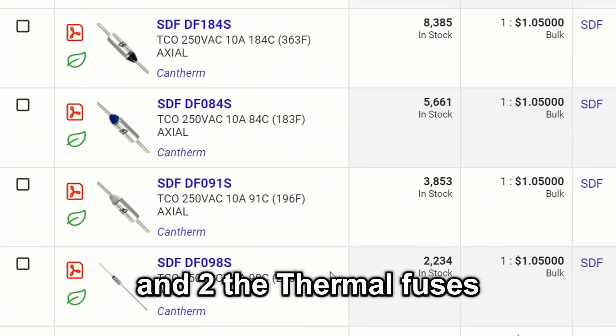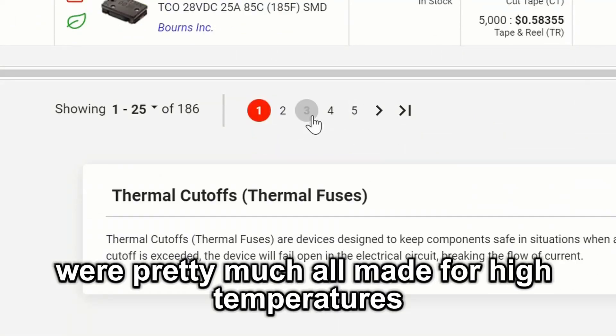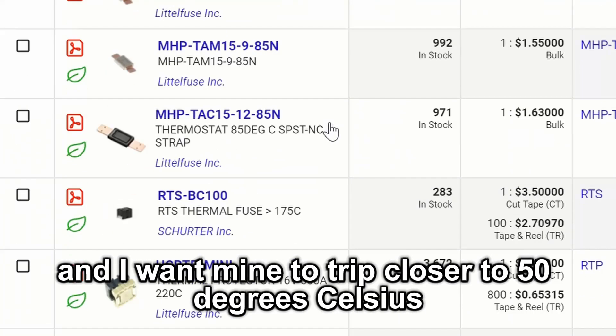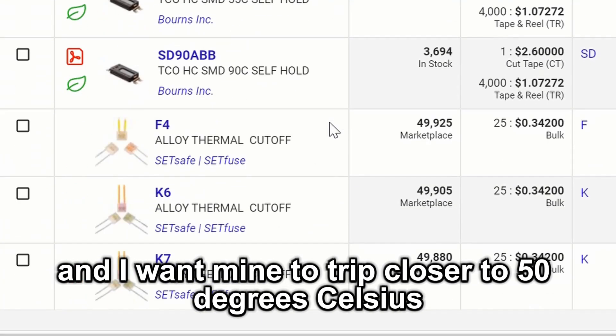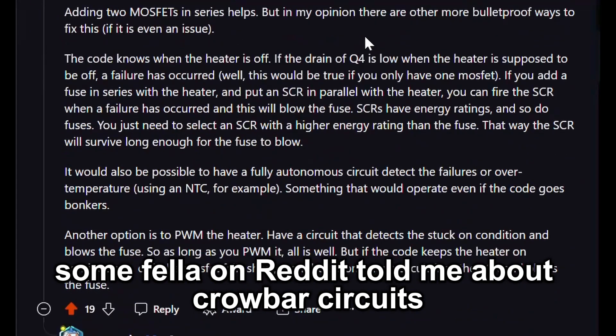And two, the thermal fuses I found were pretty much all made for high temperatures, and I want mine to trip closer to 50 degrees Celsius. But then I got an amazing tip. Some fella on Reddit told me about crowbar circuits.